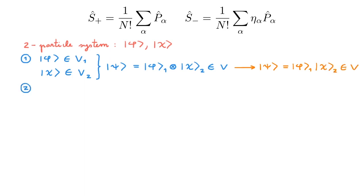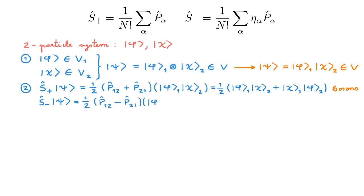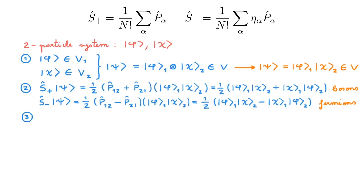The second step is to project this state onto the V_plus and V_minus subspaces. If we apply the symmetrizer to Psi, we can explicitly write out the two permutations P_{1,2} and P_{2,1} acting on Psi, and using the action of the permutation operators we get the bosonic state. If we apply the antisymmetrizer to Psi, we again write out the relevant terms and get the fermionic state, which has an additional negative sign. The third and final step is to normalize the state. We need to distinguish two situations: the first corresponds to phi different from chi.